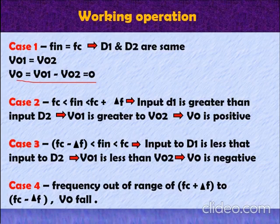In case 2, FC is less than fin is less than FC plus del F. In this range of the input frequency, the induced voltage in the winding T1 is higher than that induced in T2. Therefore, the input to D1 is higher than D2. Hence, V01 is greater than the output voltage V02 of D2. Therefore, the output voltage V0 is positive.